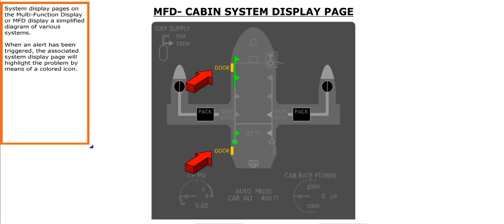System display pages on the multi-function display, or MFD, display a simplified diagram of various systems. When an alert has been triggered, the associated system display page will highlight the problem by means of a colored icon.